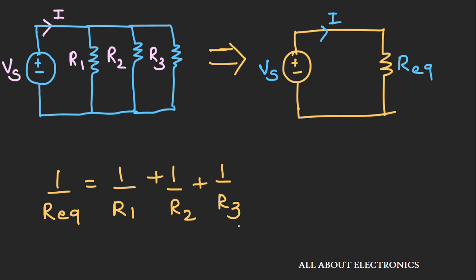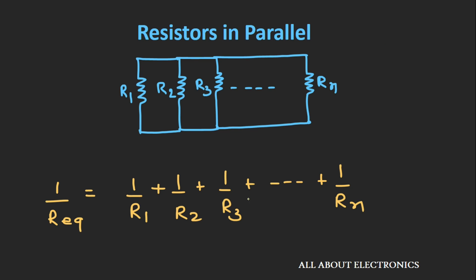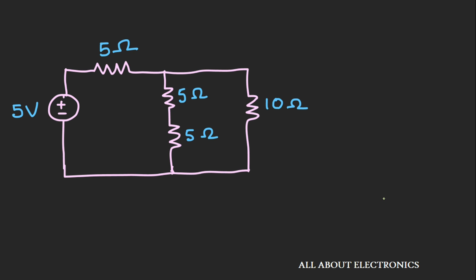So, if three resistors are connected in parallel, their equivalent resistance can be given by this expression. Now let's take one example based on the series and parallel combination of resistors. We have a given circuit, and we need to find the current I supplied by the voltage source. Since we are not bothered about the voltage or current across any individual resistor, we can simply replace all the resistors by their equivalent resistance and then use Ohm's law to find current I.